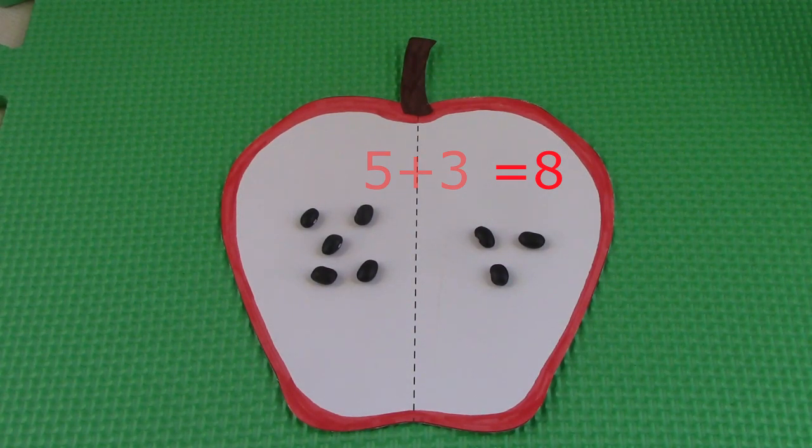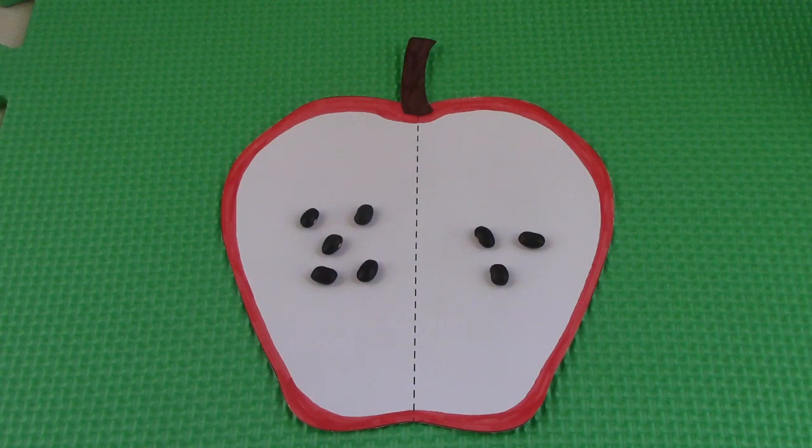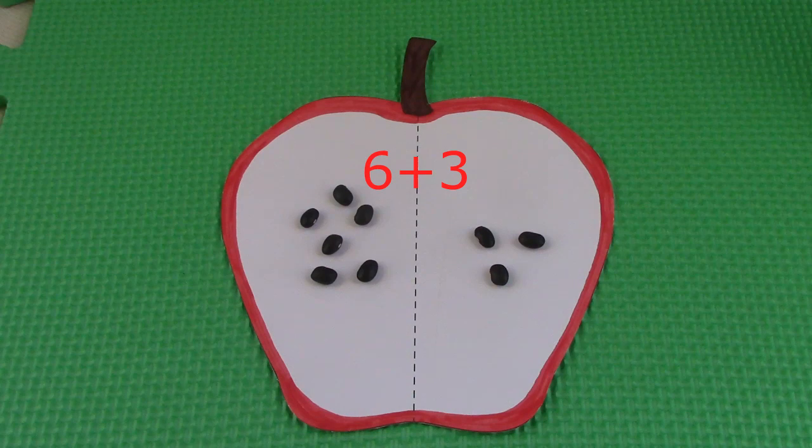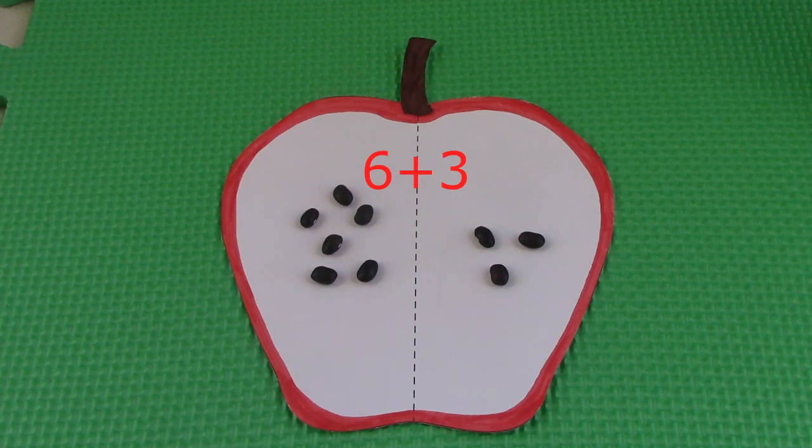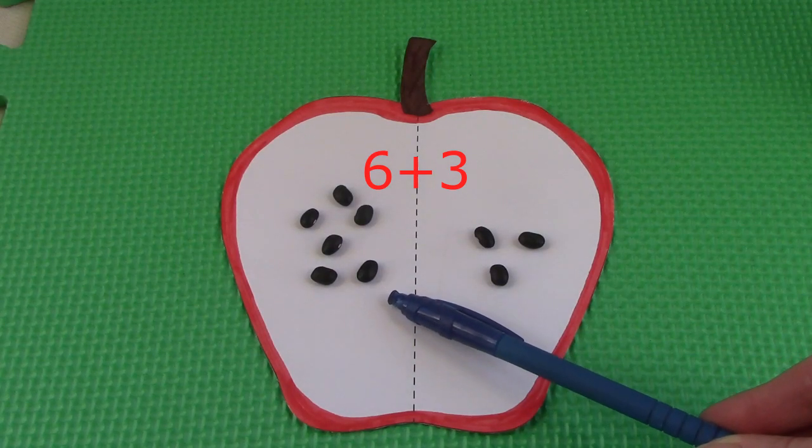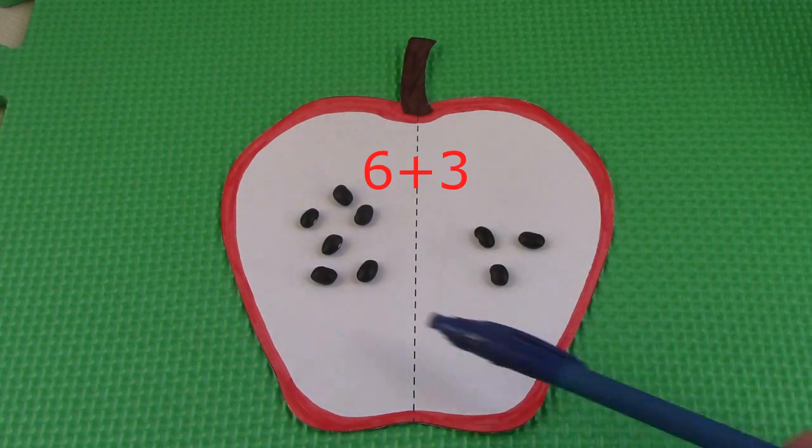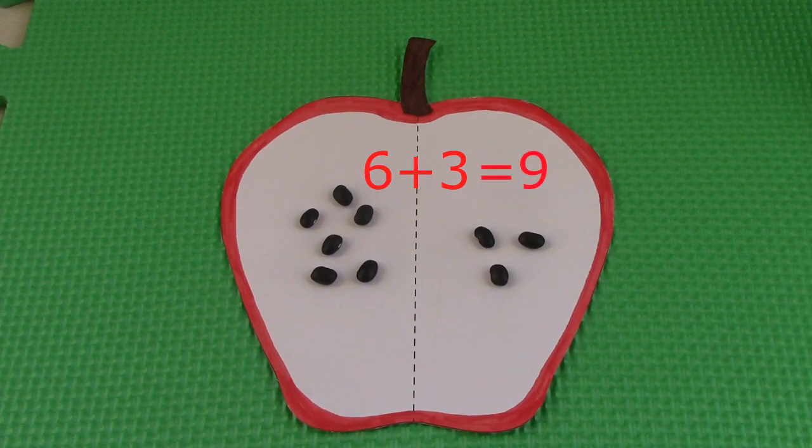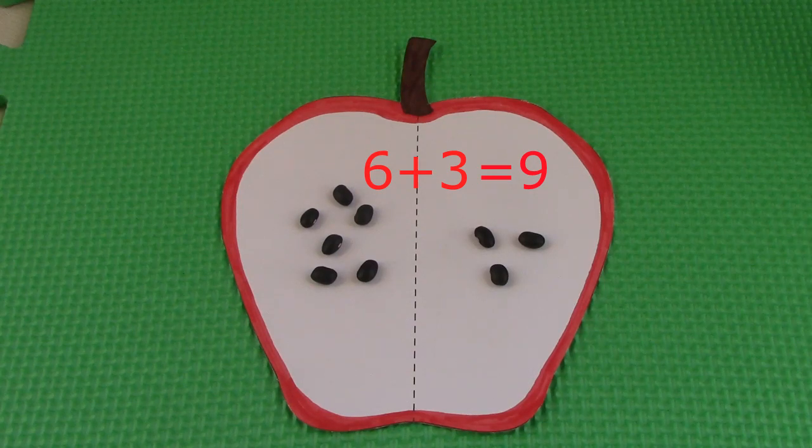One of the next facts that is one of our last facts is 6 plus 3. If 5 plus 3 was 8, what would 6 plus 3 be? Well, let's add on. We have 6, and we're going to add 3 to it. 6, 7, 8, 9. 6 plus 3 is 9.